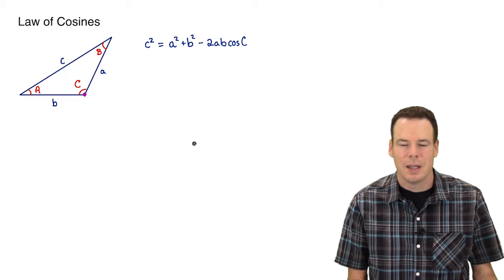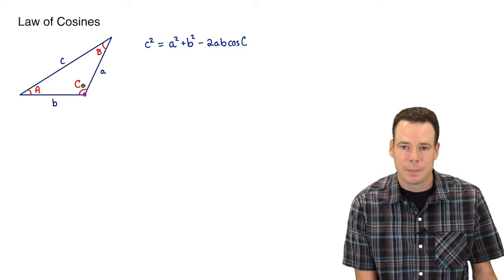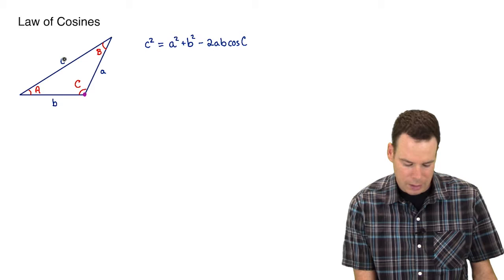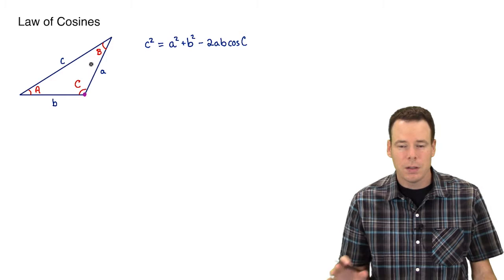Hi everyone. In this video I'm going to recall what the Law of Cosines is and also give a proof of it. The Law of Cosines concerns a triangle. We've labeled the interior angles capital A, capital B, and capital C, and the lengths of the sides opposite those angles are indicated by little a, little b, and little c. The Law of Cosines gives us a relationship between one of the angles and the lengths of the three sides.